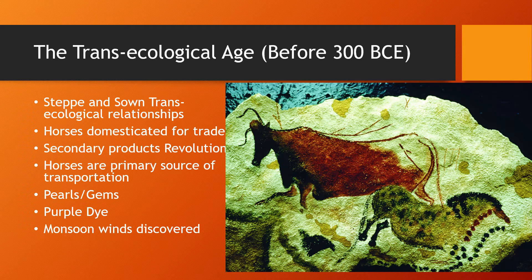Before 300 BCE, this is considered the trans-ecological age. By that I mean Steppe-to-town trans-ecological relationships existed only — nothing from east to west. Horses were domesticated for trade. Trade would mean horses for pearls and gems, horses for silk, but mostly horses for food, grains, etc. There was a secondary products revolution and horses are the primary source of transportation, very important to somebody that wants to travel.